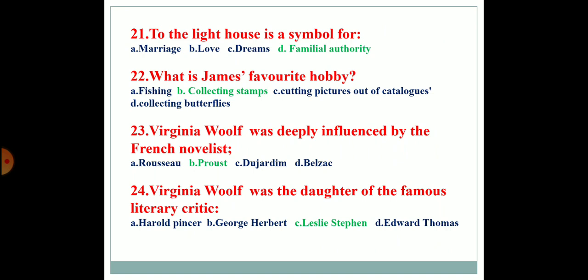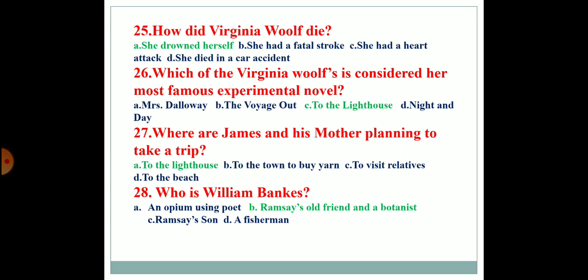To the Lighthouse is a symbol for familial authority. What is James' favorite hobby? His favorite hobby is collecting stamps. Virginia Woolf was deeply influenced by the French novelist Proust. Virginia Woolf was the daughter of the famous literary critic Leslie Stephen. How did Virginia Woolf die? She drowned herself. Which of Virginia Woolf's novels is considered her most famous experimental novel? To the Lighthouse. Where are James and his mother planning to take a trip? They are planning to take a trip to the lighthouse.